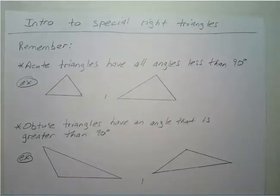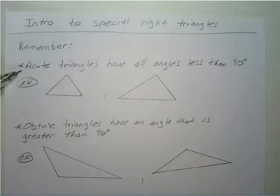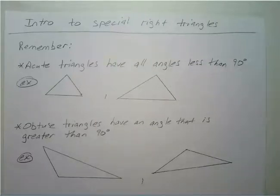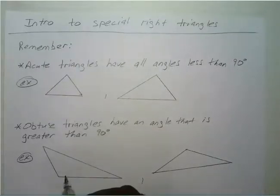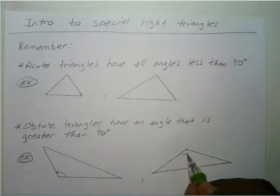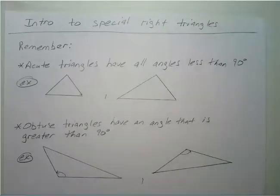Just a little recap. Remember that an acute triangle has all angles less than 90 degrees — you can look at them and tell when they're less than 90 degrees, all the angles are pretty small. An obtuse triangle has at least one angle that's greater than 90 degrees, as you can see.